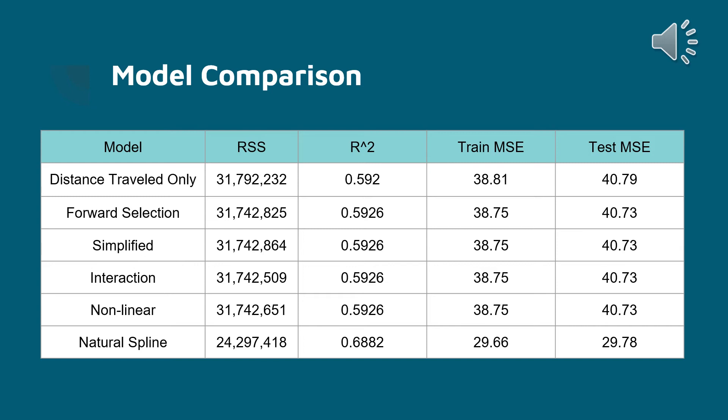To evaluate all these models, we compared them using RSS, R-squared, and mean squared error for the train and test sets. For all of the regression models — using only distance traveled, all predictors through forward selection, the simplified model, the interaction model, and the nonlinear model — they all had very similar RSSs, R-squareds, and mean squared errors. Interestingly, when moving from the train set to the test set, we had about a 5% increase in the mean squared error, which is not too bad.